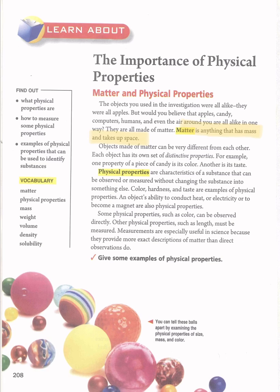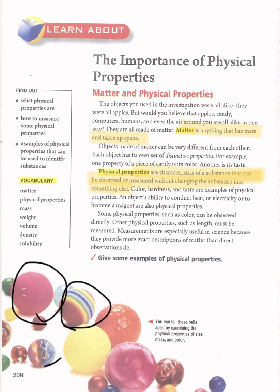Physical properties are characteristics of a substance that can be observed or measured without changing the substance into something else. Examples of physical properties include color, hardness, taste, size, mass, and weight. Here we have a lot of balls that are different in color and in size — those properties are physical properties of matter.